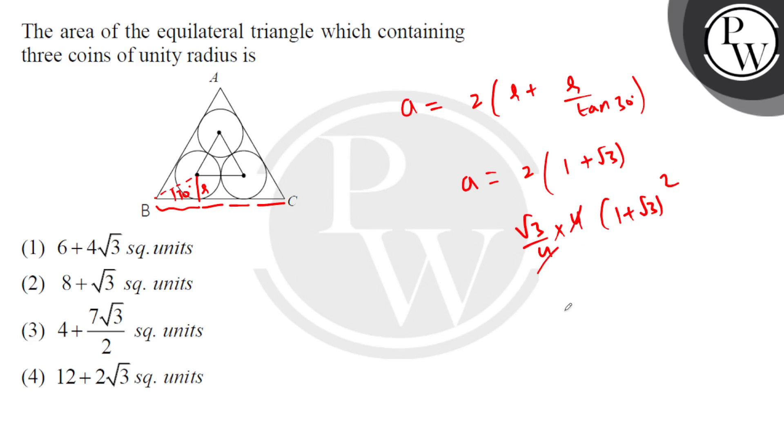4 to 4 cancel. Root 3 times, this is 1 plus 3 plus 2 root 3.